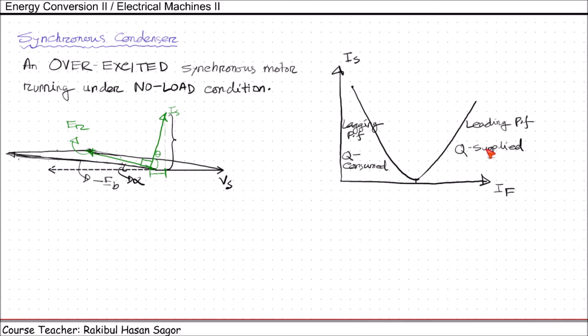Sometimes the synchronous motors are built in such a way that they are made specifically for power factor correction. These machines have shafts that do not even come through the frame of the motor. But nowadays, conventional static capacitors are more economical to buy and those are used more widely than synchronous capacitors or synchronous condensers.